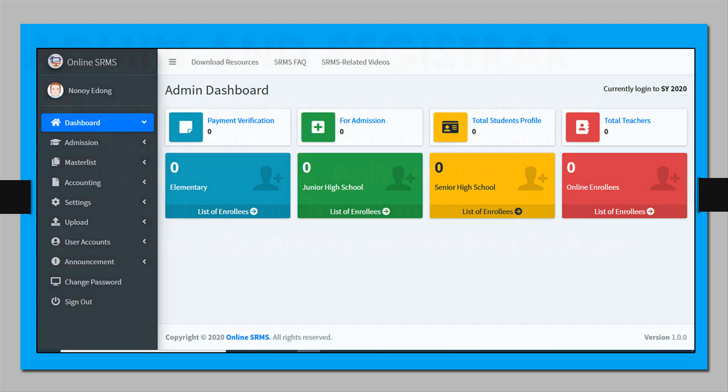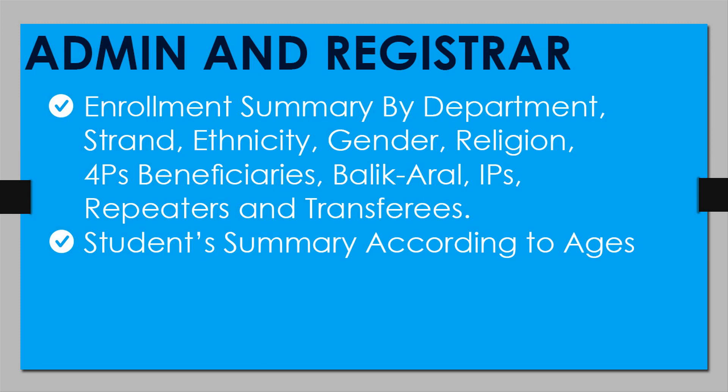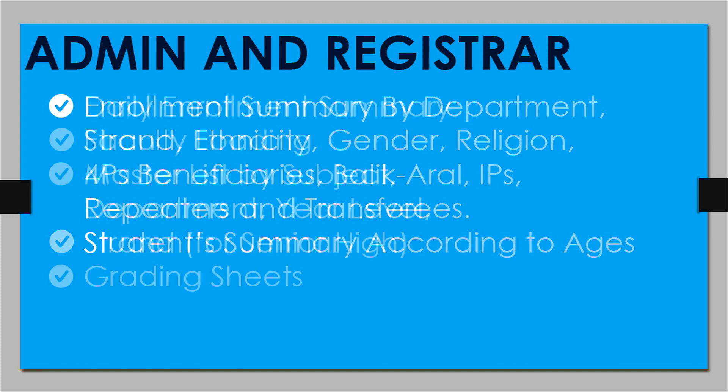The admin and registrar account can generate enrollment summary by department, strand, ethnicity, gender, religion, 4Ps beneficiaries, balik-aral, IPs, repeaters, and transferees. Student summary according to EGIS, daily enrollment summary.